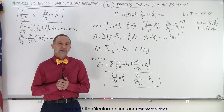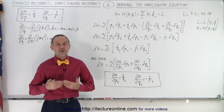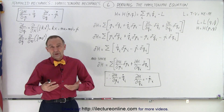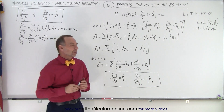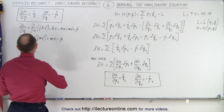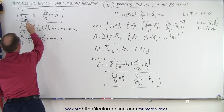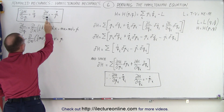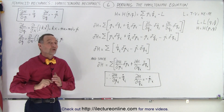Welcome to our lecture online. We have now seen a few examples of how to utilize the Hamiltonian in order to solve some simple mechanical problems, and we made use of two equations: the partial derivative of the Hamiltonian with respect to momentum was equal to q-dot, and the partial derivative of the Hamiltonian with respect to q was equal to minus p-dot. The question is, where do those come from?